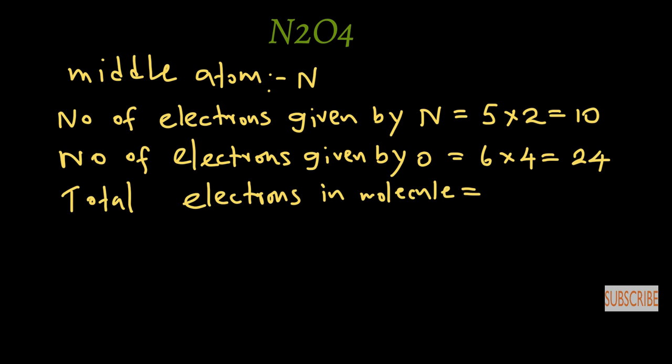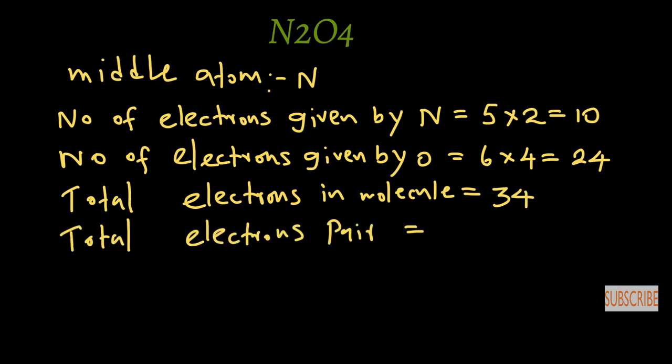Now we need to find the total electrons in this molecule, which is 34 electrons. Then consider the total electron pairs — we divide 34 by 2, giving us 17 electron pairs in N2O4.